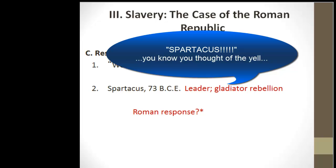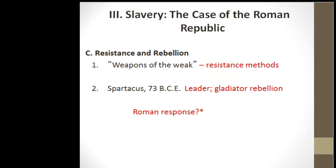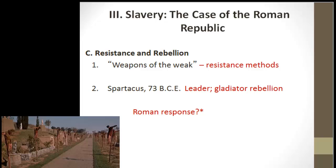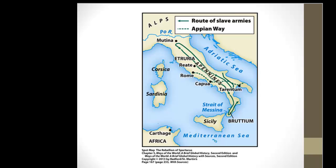Spartacus started his rebellion in the year 73 BCE. He led a rebellion of slaves trained for the gladiatorial games — militarily trained slaves at the peak of their physical fitness with swords. Spartacus led a two-year rampage of revenge up and down the Italian peninsula, freeing slaves, burning estates to the ground, and killing masters. But he was stopped. Once stopped, the Roman Republic crucified some 6,000 captured rebels along the Appian Way as a warning to future rebels.